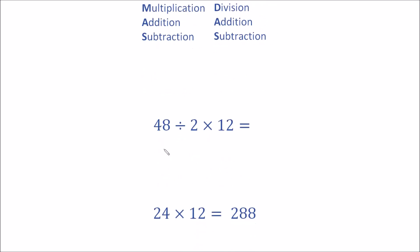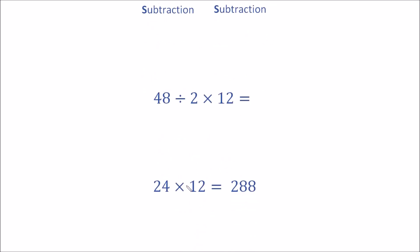So using this we get 24 times 12 equals 288. So is this correct? Well, no, this is convention, and we know from history conventions change over time.